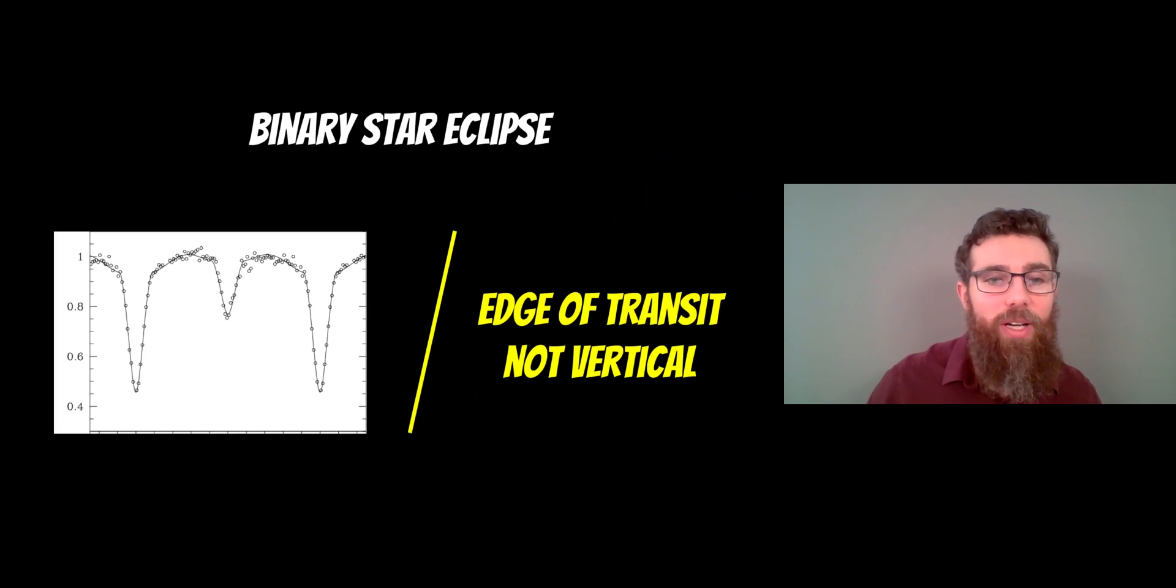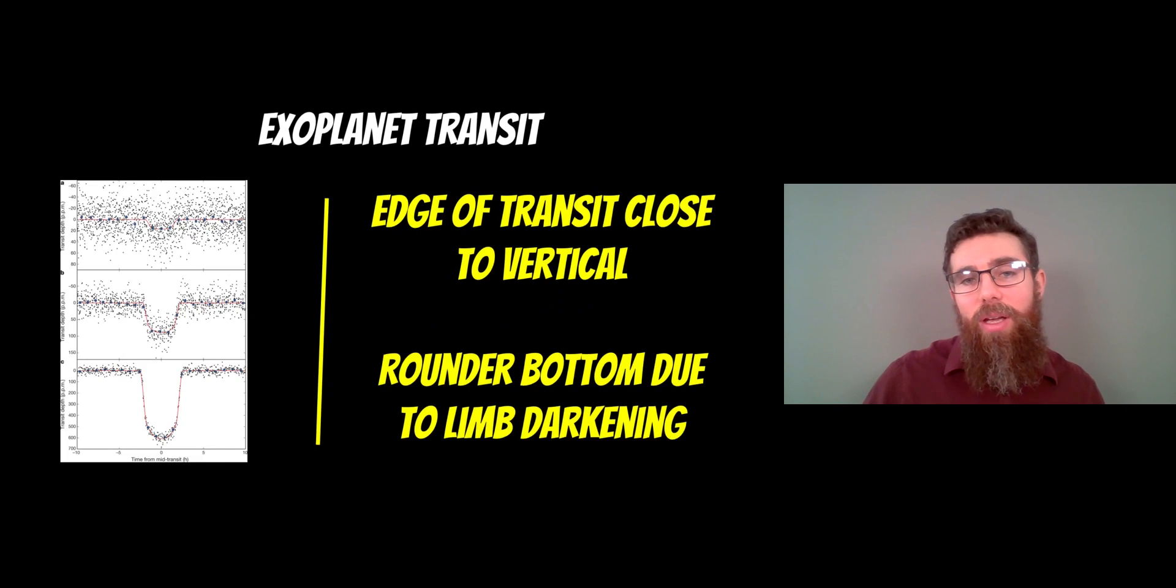So a binary star eclipse, the edge of the transit is not vertical. It's more angled. And an exoplanet transit, it's closer to being vertical because it's smaller. It passes in front of the star quicker, and then it stays blocking out as much light as it can for a longer period of time, whereas the star wouldn't do that. You get a bit of a rounder bottom due to limb darkening as well.